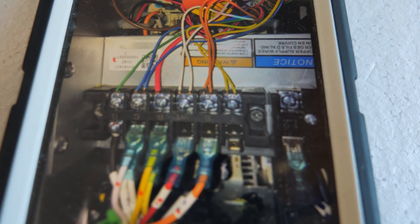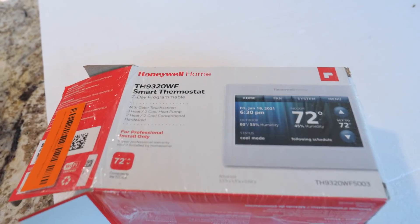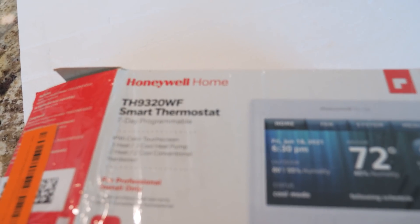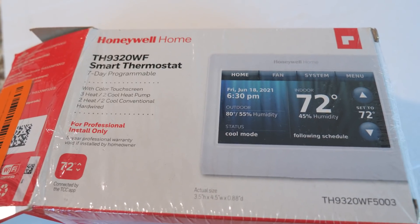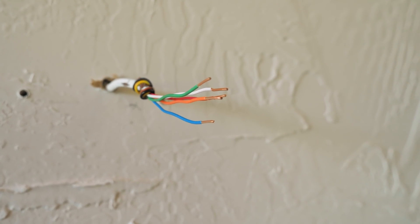G is green. This is a Honeywell smart thermostat. And these are the five wires we're using, red, green, white, orange, blue.